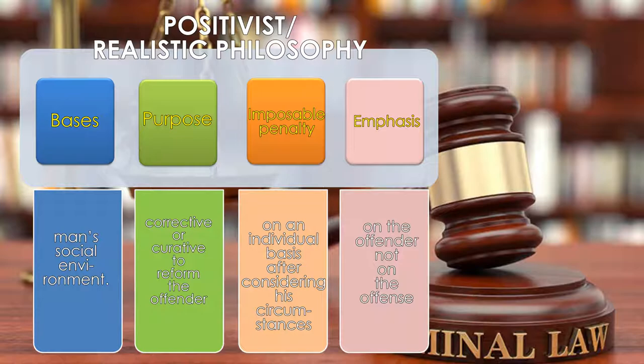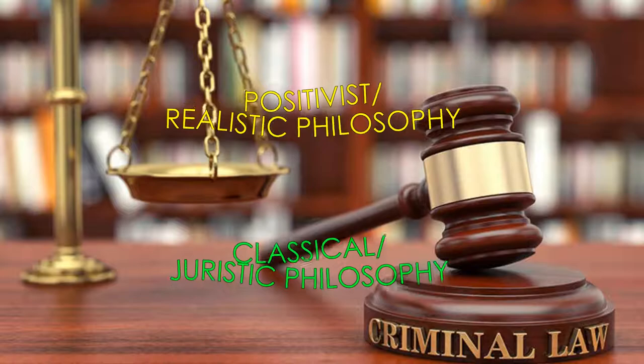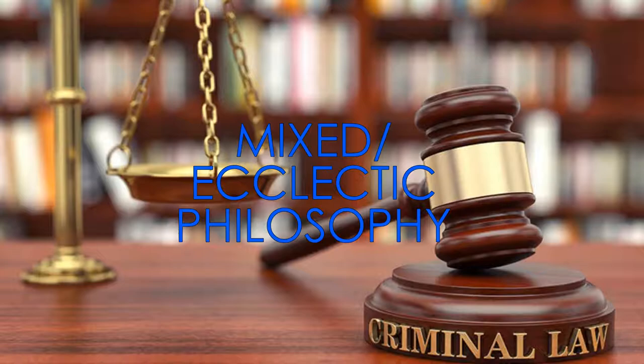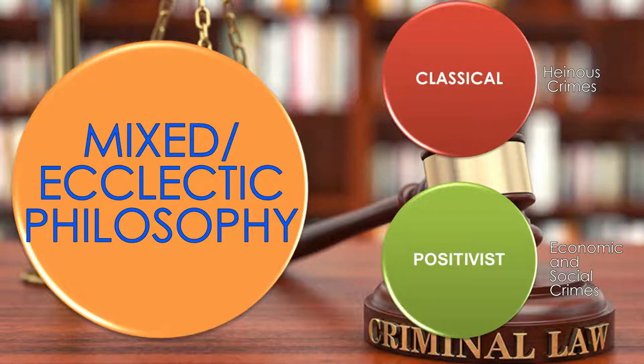The Indeterminate Sentence Law, Probation Law, the Threefold Rule, and the rules on mitigation of crimes apply the positivist theory. Combining the good features of both the classical and the positivist theory, we have what they call the mixed or eclectic philosophy. Ideally, the classical theory is applied to heinous crimes, whereas the positivist works on economic and social crimes.